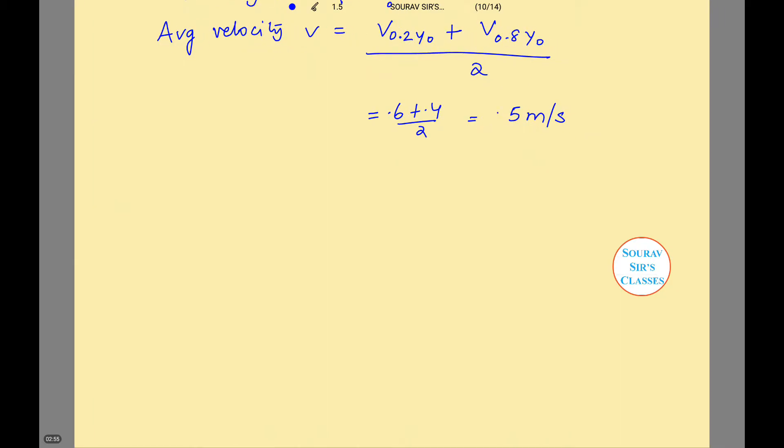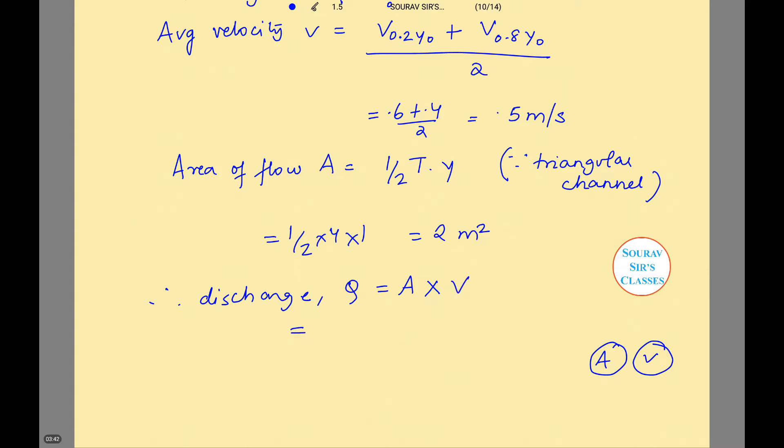Now we will calculate the area of flow, because for calculating discharge we require both area of flow and average velocity. Area of flow A = (1/2) × T × y for a triangular channel. This equals (1/2) × 4 × 1 = 2 m². Therefore, discharge Q = Area × Average velocity = 2 × 0.5 = 1 m³/s.